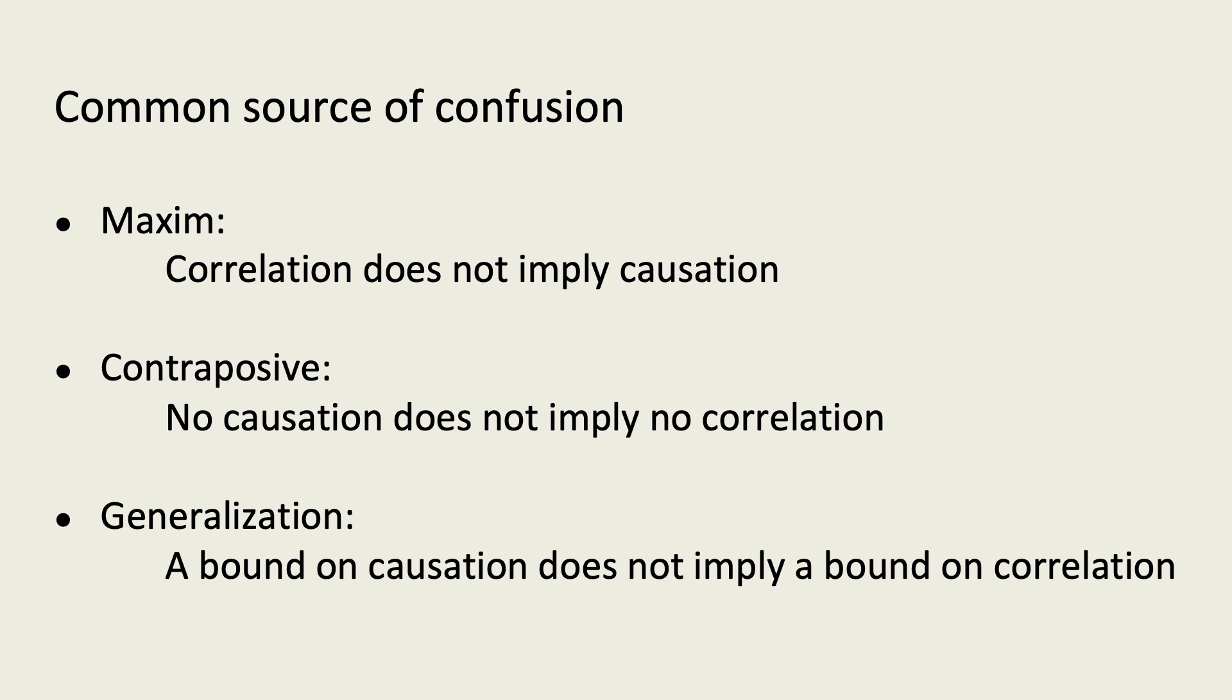With this measure of effect size, we can make precise our explanation of why disagreement exists in the prior work. The essence of the disagreement is the feeling that differential privacy should be bounding the size of some relationship between each data point and the output. Without a causal understanding of differential privacy, it's natural to assume that the relationship is correlation. However, differential privacy actually bounds the effect size instead. That this causal bound does not imply a bound of correlation is roughly equivalent to the maxim that correlation does not imply causation. So the perceived shortcoming of differential privacy is related to a well-known confusion.